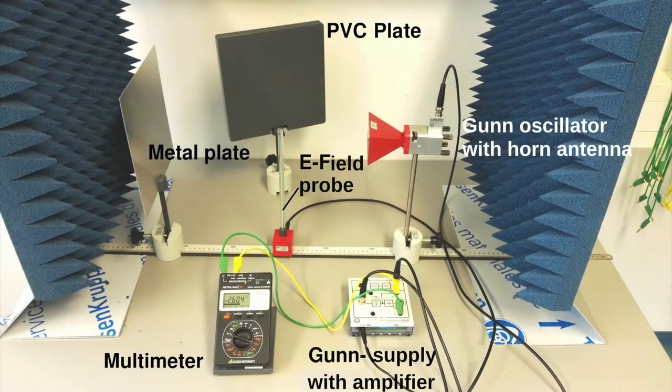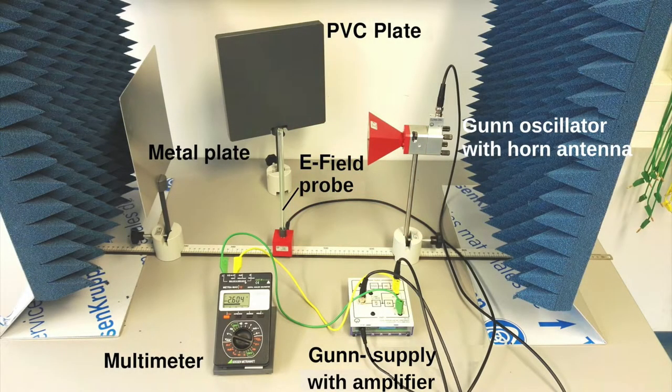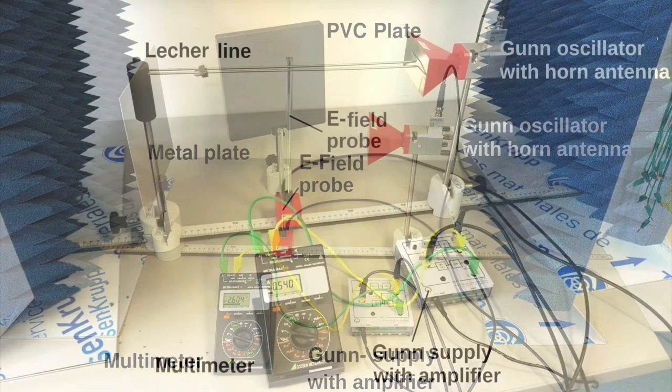Consists of a gun supply with amplifier, a gun oscillator with horn antenna, an E-field probe, a voltmeter, a scale, and metal and PVC plates. The experimental part, microwaves in a Lecher line.